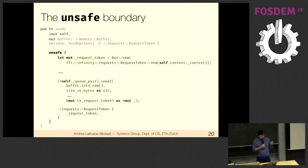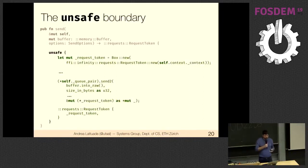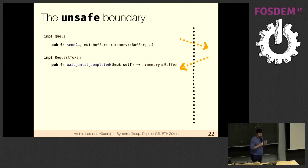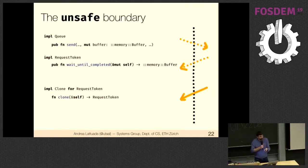A few comments on edge cases. The send operation has an unsafe block. The Nomicon says unsafe marks code where we're doing unsafe operations and we should ensure that at the boundaries everything is safe again. But safety is non-local: if someone else implements Clone for RequestToken, we can arbitrarily duplicate it, get back multiple copies of the same buffer, and now we're back to data races and undefined behavior from multiple mutable references.